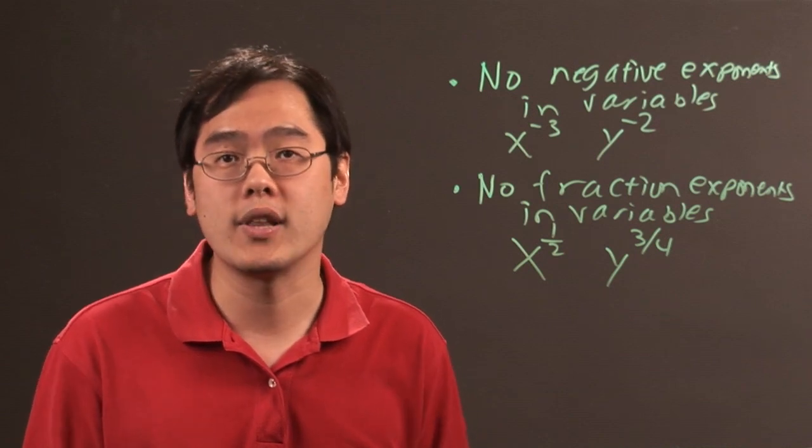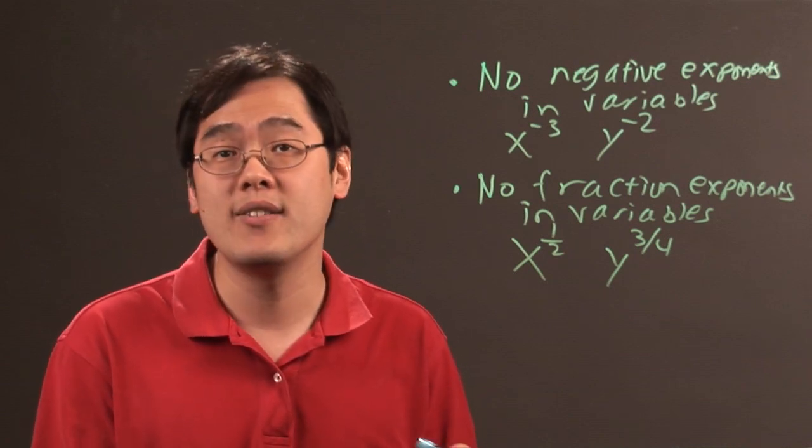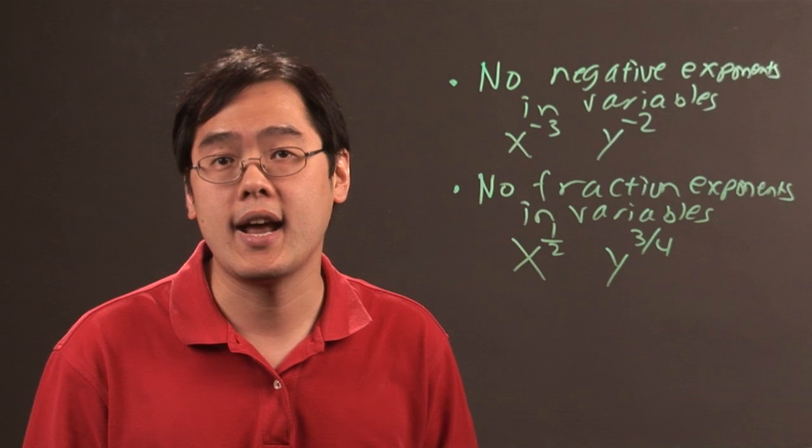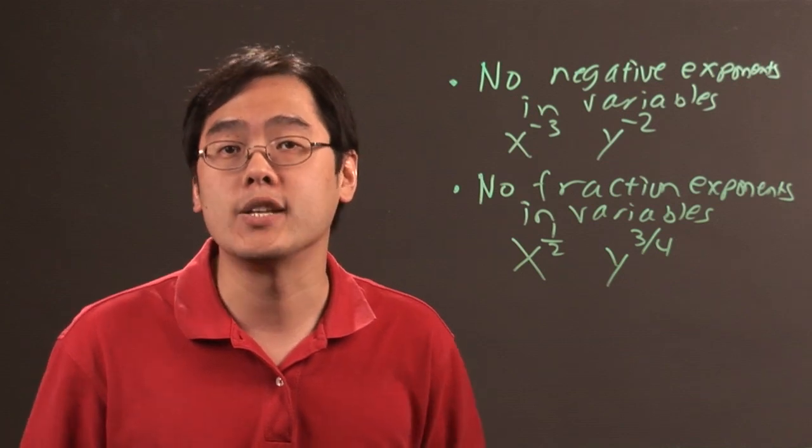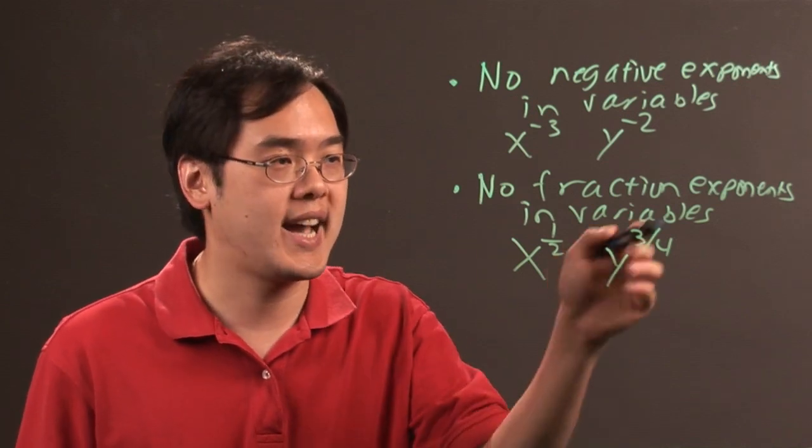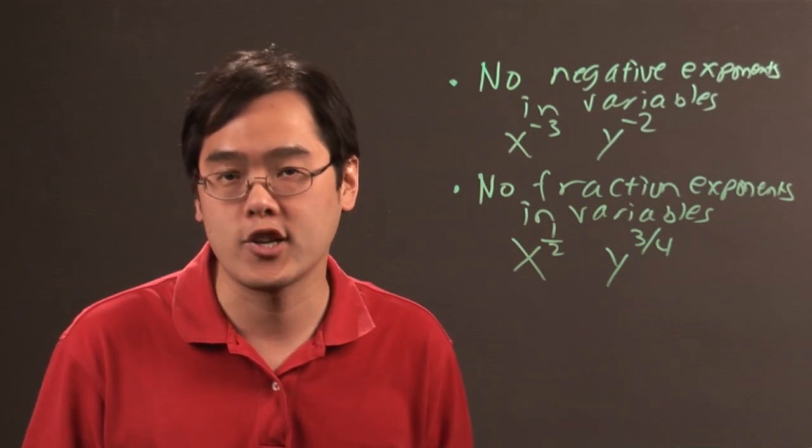Now you cannot have anything weird like x to the pi or certain decimal exponents. You cannot have, for example, y to the 4.2. So that's kind of related to that, but 4.2 can be expressed as a fraction.